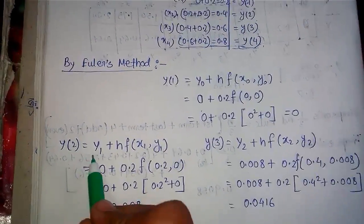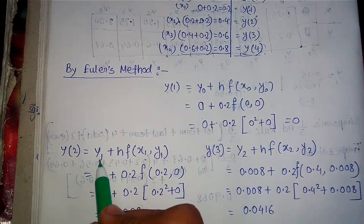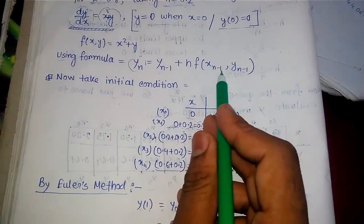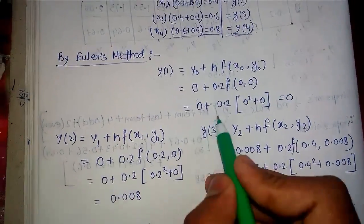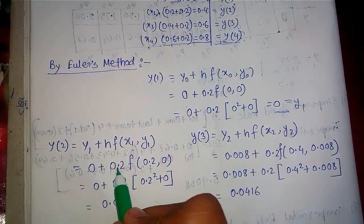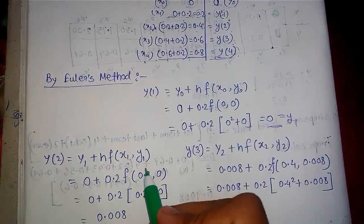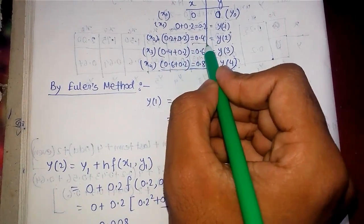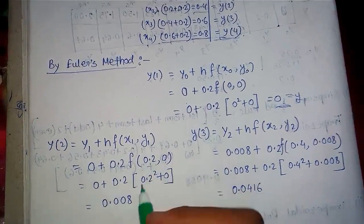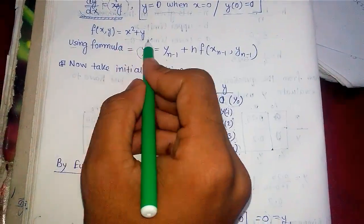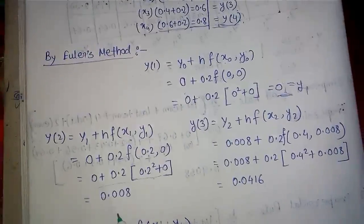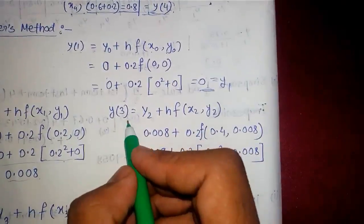Next we calculate y₂. Using the formula, y₂ equals y₁ plus h times f(x₁, y₁). Here y₁ equals 0, h is 0.2, x₁ we calculated as 0.2, and y₁ is 0. Our function is x squared plus y, so f(0.2, 0) equals 0.2² plus 0 equals 0.04. Therefore y₂ equals 0 plus 0.2 times 0.04 equals 0.008.